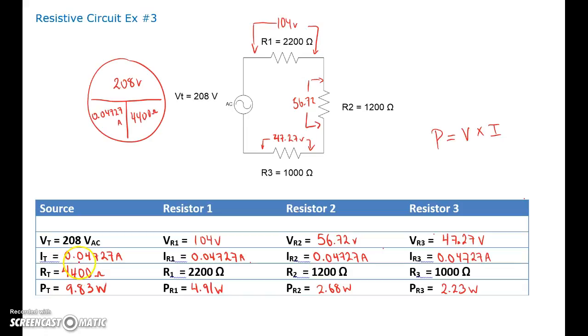I decided to use this current, 0.04727 amps, that way I could go through and find my individual voltages. But again, from the first video there, if I was asking you how many milliamps that would be.